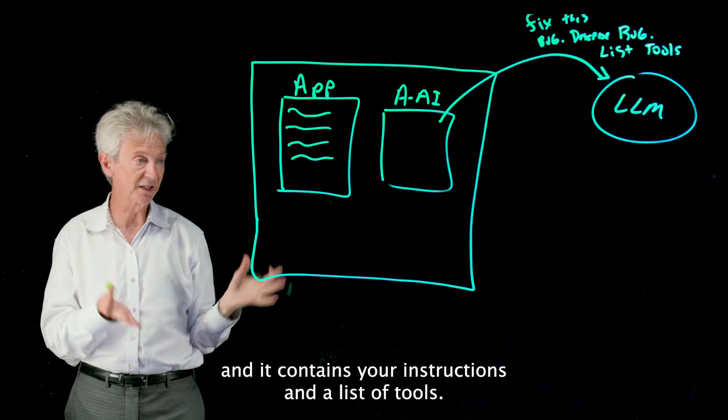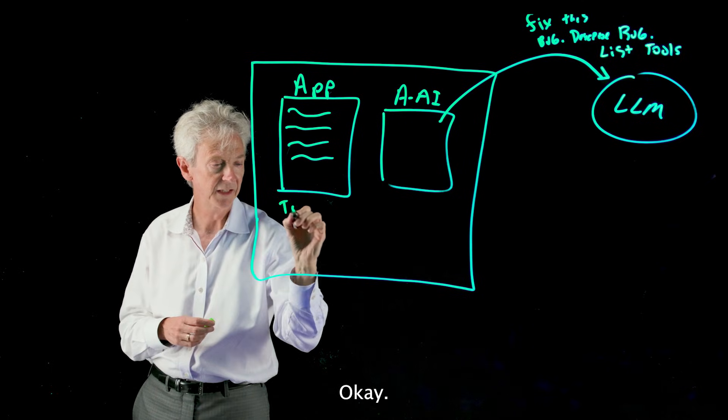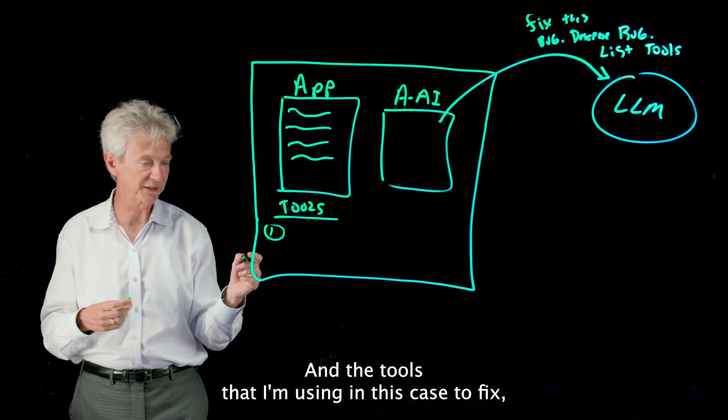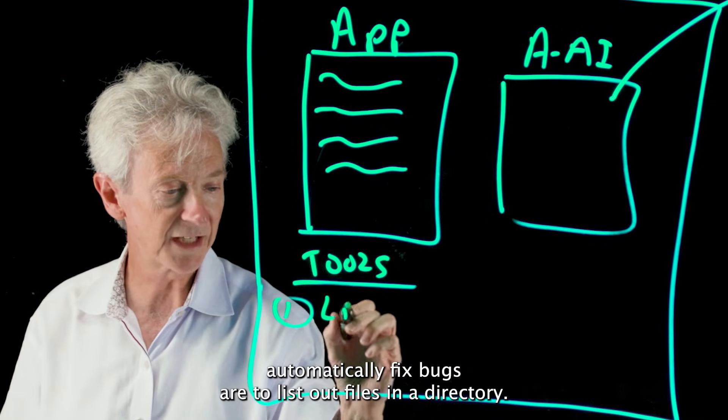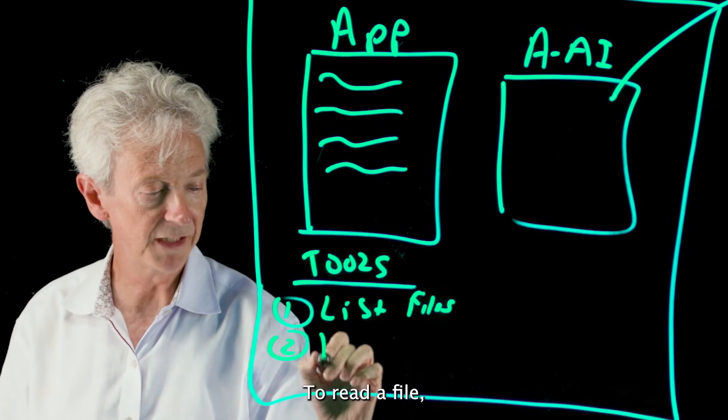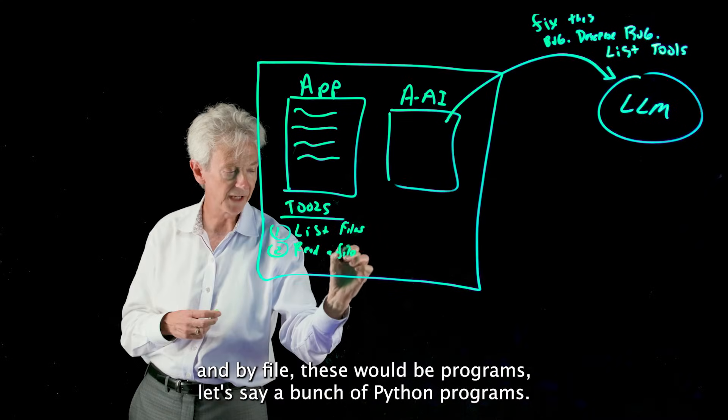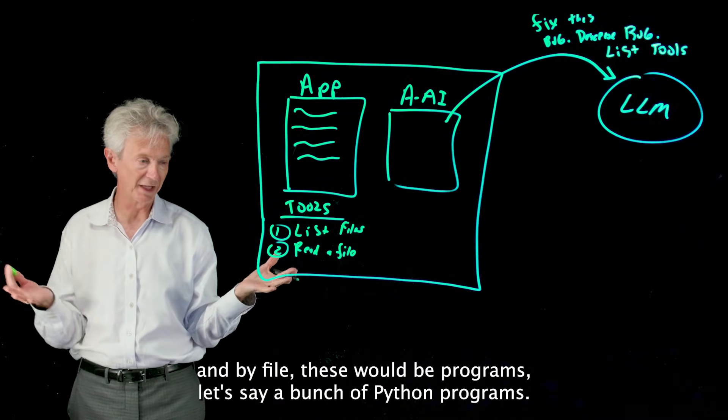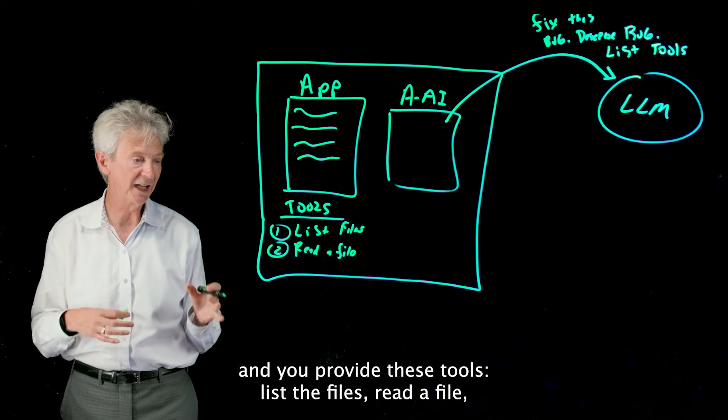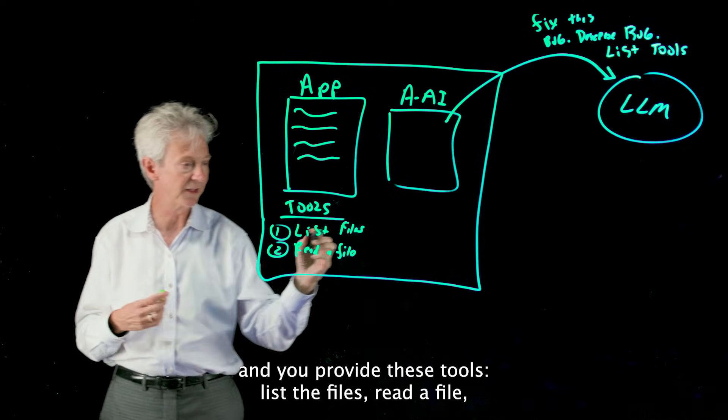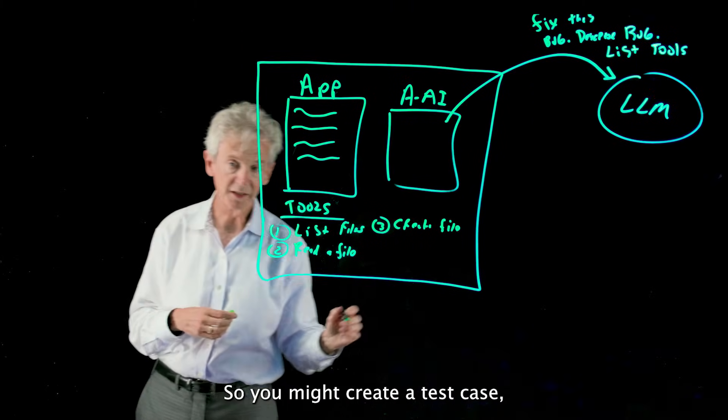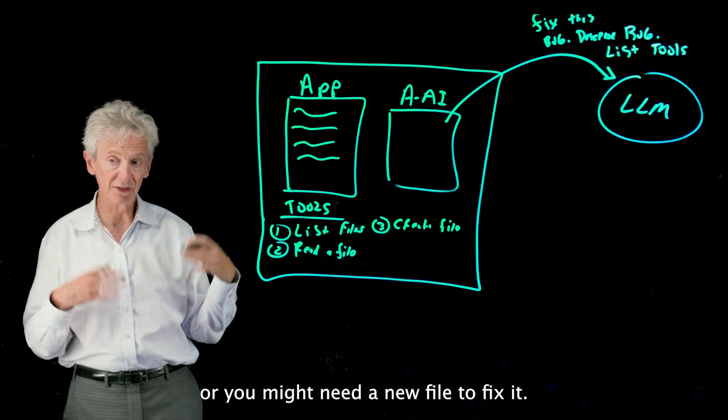Okay, and the tools that I'm using in this case to automatically fix bugs are: list out files in a directory, read a file—and by file these would be programs, let's say a bunch of Python programs. So you have a directory, you have a bug in this bunch of files, and you provide these tools: list the files, read a file, create a new file. So you might create a test case or you might need a new file to fix it.